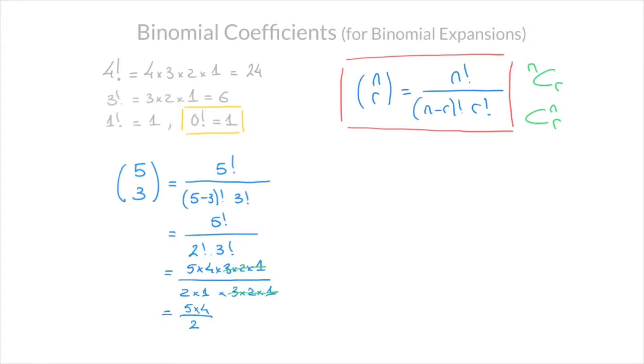And 5 times 4 is 20, divided by 2, that's equal to 10. So we can state that (5,3), the binomial coefficient, is equal to 10. And we're done.